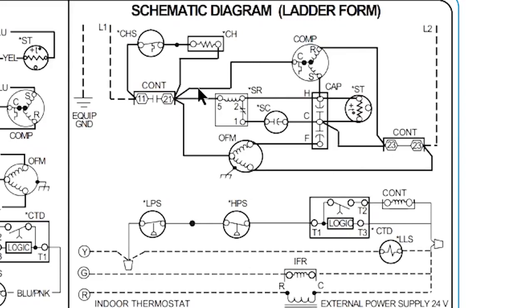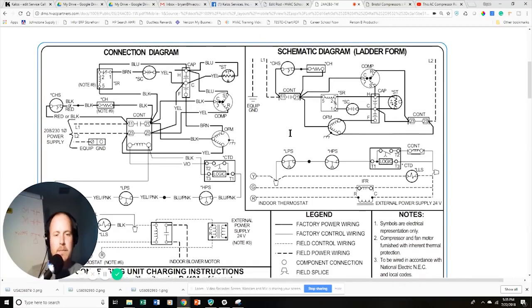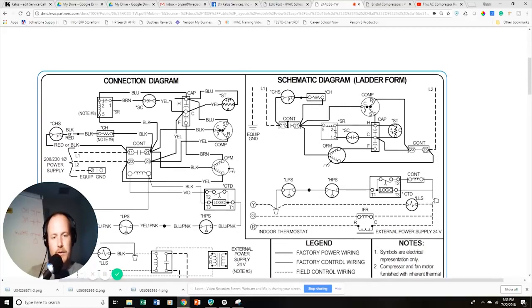The connection diagram and schematic diagram show the same thing in slightly different ways. On the schematic side, everything is broken up to make diagnosis easier. On the connection diagram side, components are grouped together so they're easier to identify — the contactor looks more like an actual contactor. Now, going through this contactor: this is a normally open contact. You can tell because there's a gap between the two contact points.